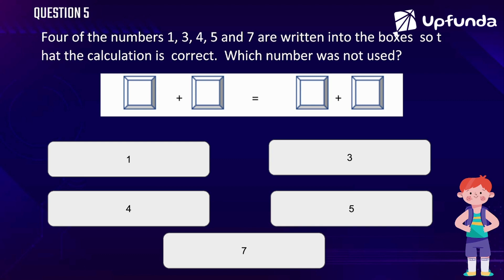They have the boxes like this: you have two boxes here and two boxes here. There is an equal sign and a plus sign on both sides. Which means when you add two numbers, you get a sum which is equal to adding other two numbers, and those four numbers are from these five numbers.